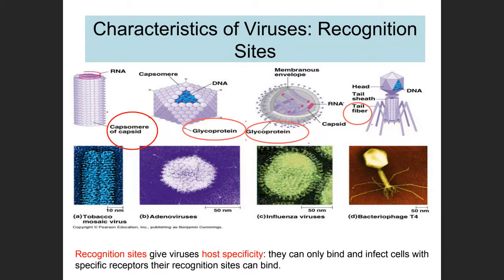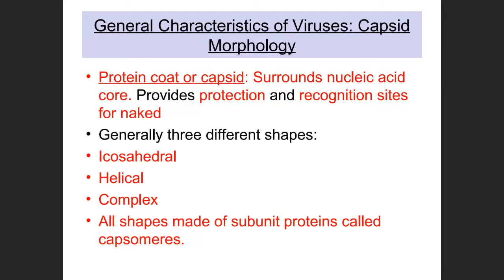Recognition sites give host specificity — these molecules specifically bind to host proteins. If the host cell lacks the complementary receptor protein, the virus cannot infect that cell. That is what limits the kinds of cells that can be infected. The protein coat or capsid surrounds the nucleic acid core, providing both protection and recognition sites. The capsid can have different shapes: triangular faces forming an icosahedral shape, a rod-like helical shape, or complex shapes.